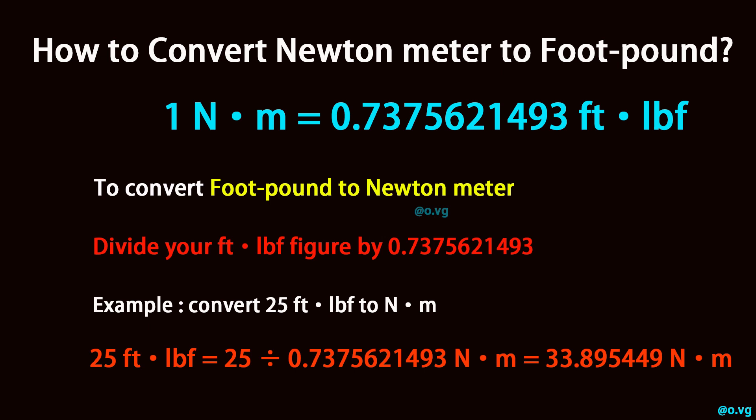divide your foot-pound figure by 0.7375621493. Example: convert 25 foot-pound to newton-meter. 25 foot-pound equals 25 divided by 0.7375621493 newton-meter, which equals 33.895449 newton-meter.